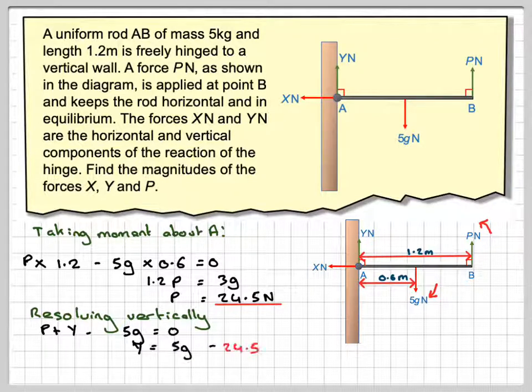We already know that P is 24.5. So Y will be equal to 5G minus P, which is 24.5, which again gives you 24.5.